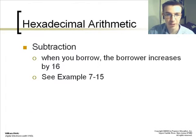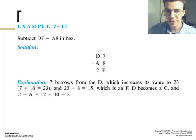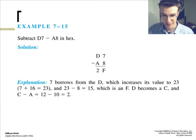In subtraction, however, when you borrow, the borrower increases by 16. This is seen in this example. Subtract D7 minus A8 in hex. The 7 borrows from the D, which increases its value to 23. So 7 plus 16 equals 23, and 23 minus 8 equals 15, which is F. D becomes a C, and C minus A equals 12, minus 10 equals 2.